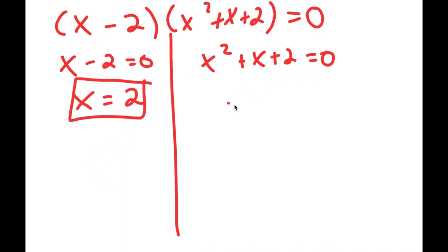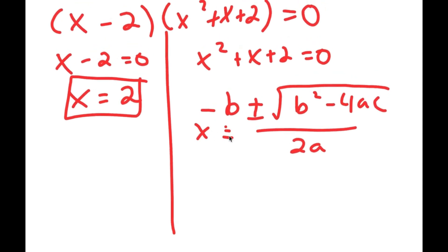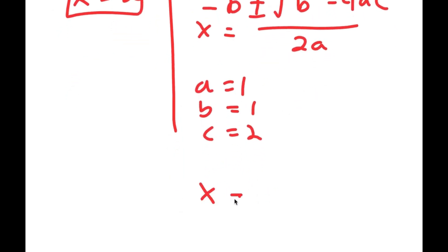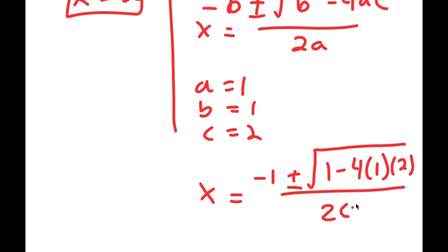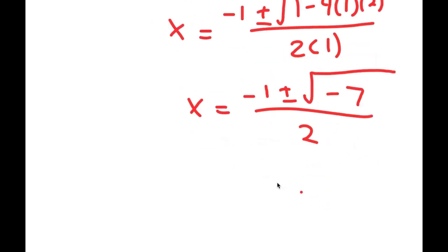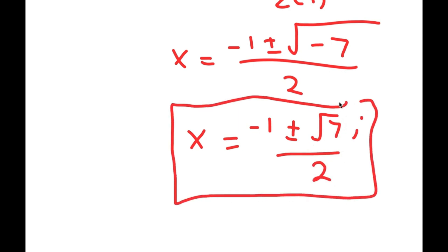For x squared plus x plus 2 equals 0, I'm going to use the quadratic formula, which is negative b plus or minus the square root of b squared minus 4ac all over 2a. In this case, a is 1, b is 1, and c is 2. So I get x equals negative 1 plus or minus the square root of 1 squared, which is 1 minus 4 times 1 times 2, all over 2. This is equal to negative 1 plus or minus the square root of 1 minus 8, which is negative 7, over 2. And this is equal to negative 1 plus or minus the square root of 7 times i, all over 2. So these are my three solutions.